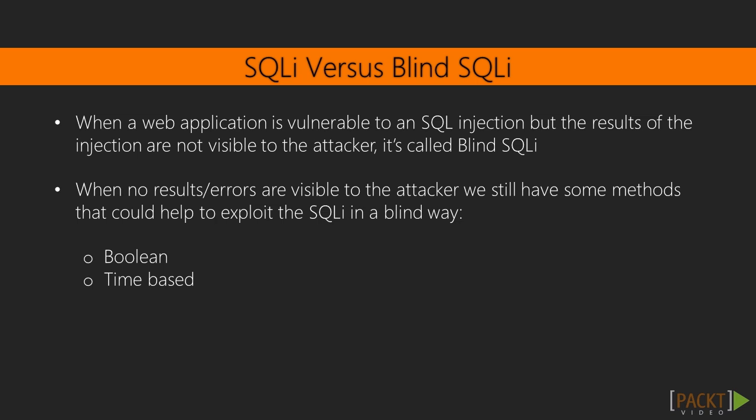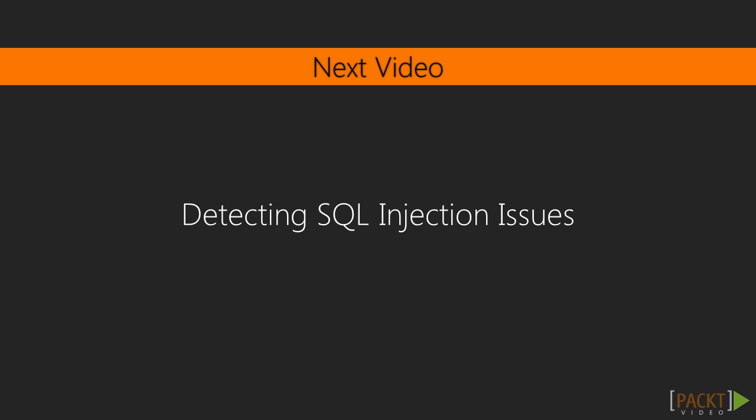The other method is time-based. This method is based on injecting payloads that trigger a delay time for the SQL server while processing our query, which in turn slows down the response time of our request. In this video we have learned what is a SQL injection vulnerability, how it works, what is a blind SQL injection, and what methods we have to deal with blind SQL injection. In the next video, we're going to learn how to detect SQL injections and automate the task with Python.